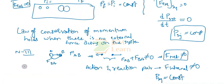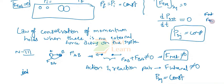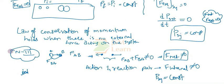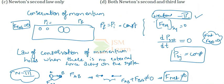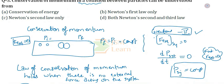This means internal forces do not affect the momentum of the system — they won't affect it. So we understood that momentum is conserved if the forces are internal and the external force is zero. In order to understand the conservation of momentum, both Newton's second law and Newton's third law were helpful.